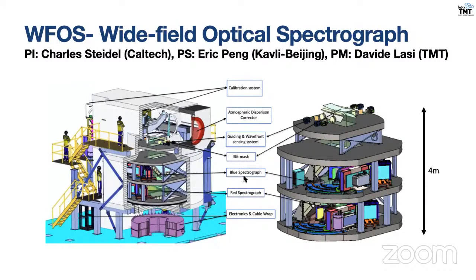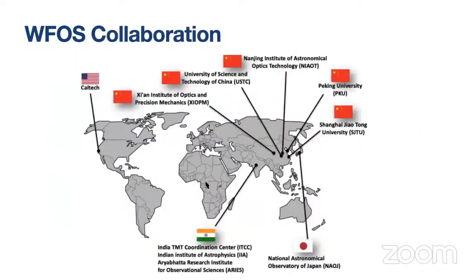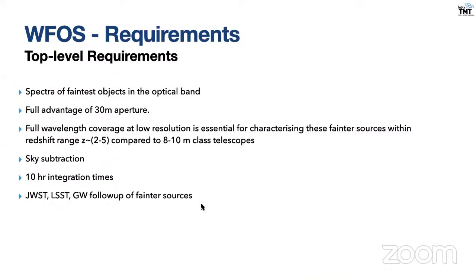The W-FORCE collaboration is between four countries: the US (especially Caltech), China, Japan, and India. The top-level requirements of W-FORCE are to obtain spectra of the faintest objects in the optical band, take full advantage of the 30-meter aperture, and give full wavelength coverage at least at the lowest resolution of R = 1500, for characterizing faint sources within the redshift range of z = 2 to 5.